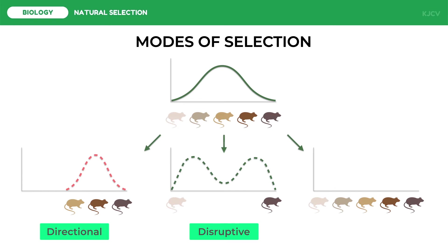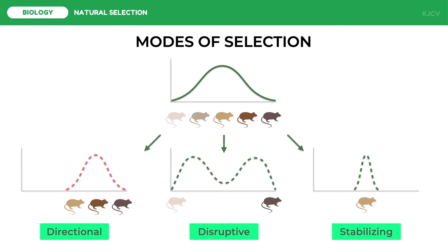Lastly, suppose a population of mice lives in a rocky area that is intermediate in color. This makes both extreme phenotypes to be selected against. This is what we call stabilizing selection. This mode of selection decreases heterogeneity and helps to preserve the existing condition for a given phenotypic character.